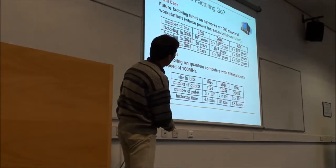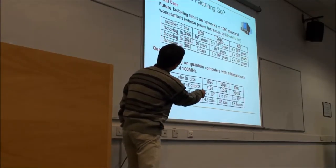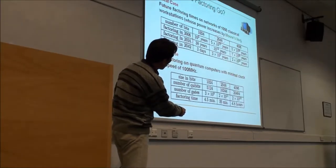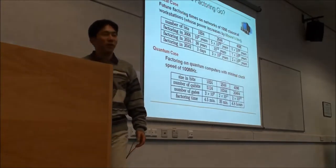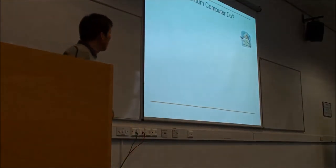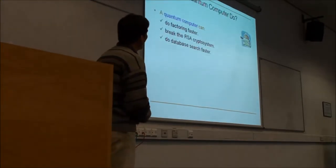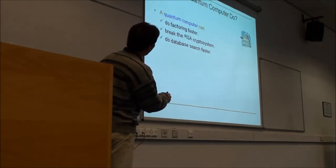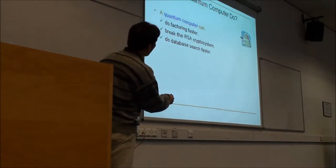If you use a quantum computer with the speed of 100 MHz, even with the same 2048 bits, we only need 36 minutes to solve the factorization problem. You can see how fast the quantum computer can be. Additionally, the RSA crypto system can be easily broken, because the RSA crypto system is based on factorization.